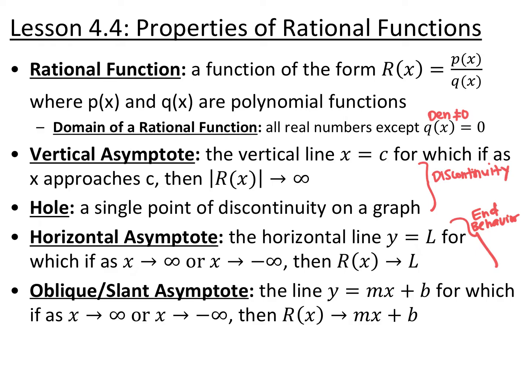Vertical asymptotes are the vertical lines x equals c, for which as x approaches c, the absolute value of r(x) approaches infinity. As your graph gets really close to c in the x direction, your graph is going to shoot up towards positive infinity or down towards negative infinity. A hole is a single point of discontinuity on a graph. Both are forms of discontinuity affected by what makes your denominator 0.